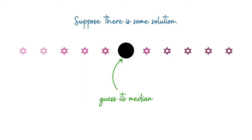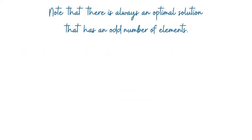It turns out that fixing the median is a much easier question to answer — the median gives a really good anchor to build out the solution. Before discussing exactly how that works, let's do some housekeeping: I'm going to assume there is always an optimal solution with an odd number of elements. This just makes everything easier to talk about.